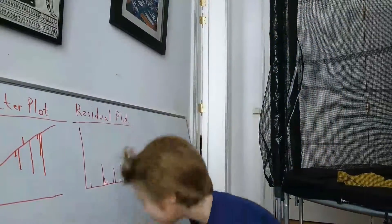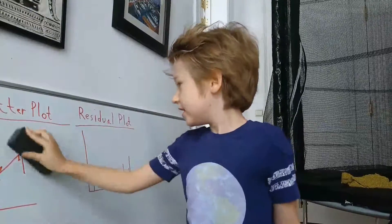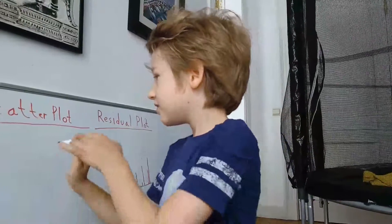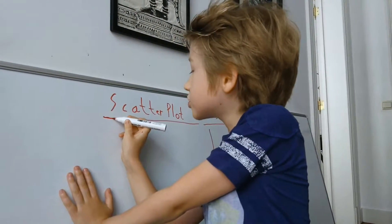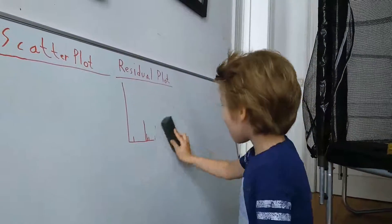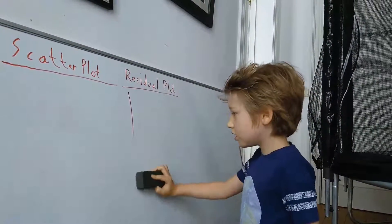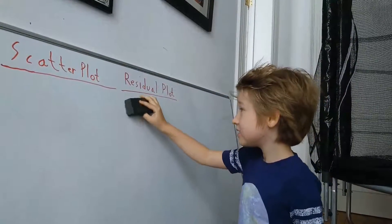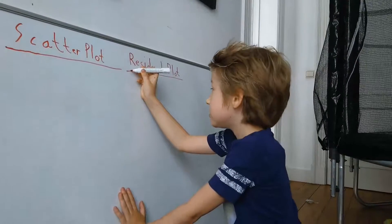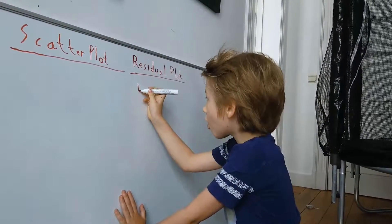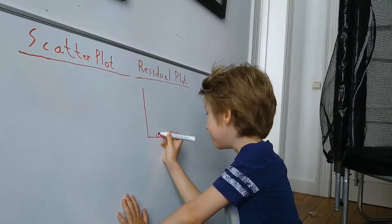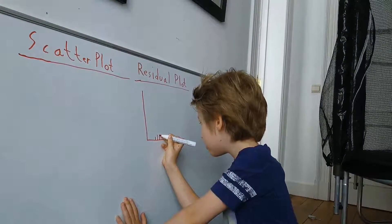There is something really magical. If you were to use a residual plot to make a bar graph of the second set of dots of Anscombe's quartet, you are going to get a perfectly symmetrical...